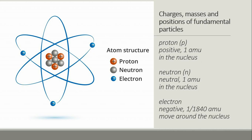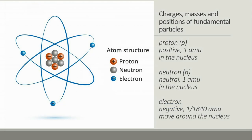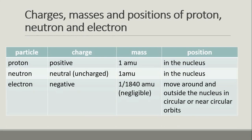The proton has positive charge, a mass of 1 AMU, and is located in the nucleus. The neutron is neutral with a mass of 1 AMU, also located in the nucleus. The electron moves around the nucleus.